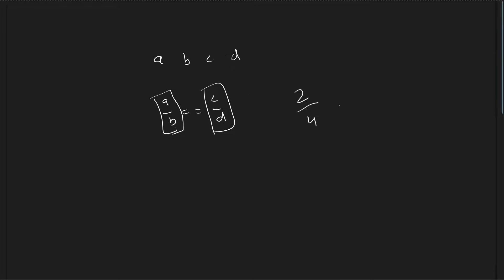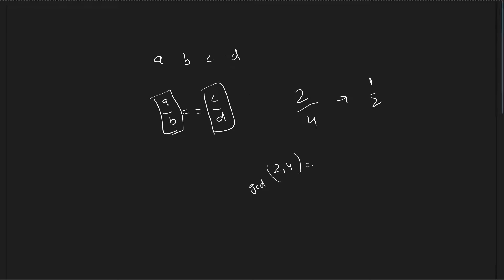For example, if I have been given 2/4, I will convert it into 1/2. I find the GCD of 2 and 4, which is 2, and divide both the numerator and denominator by it to get the simplified fraction.